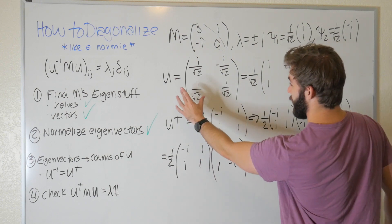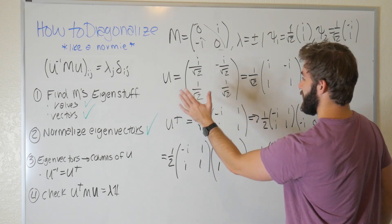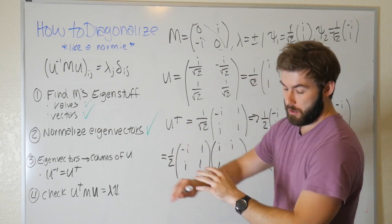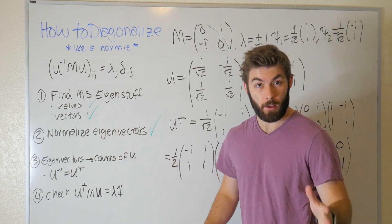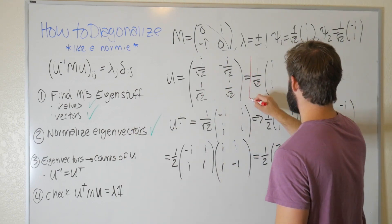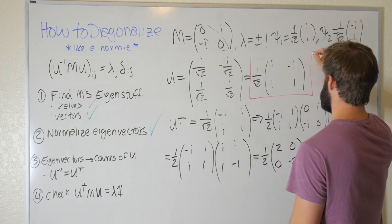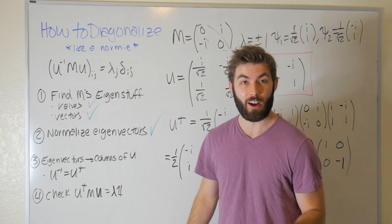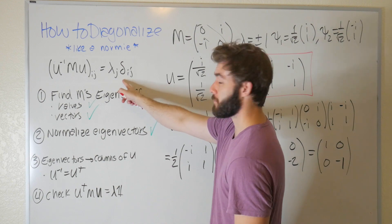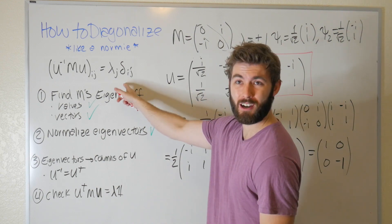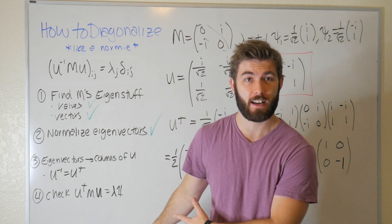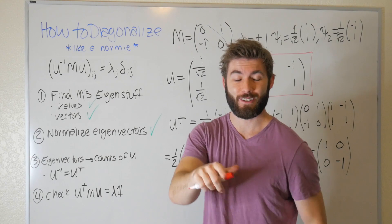We indeed found our unitary matrix that diagonalizes M, and the diagonal components are exactly the eigenvalues +1 and −1. That's all there is to it. Hope you guys found this video helpful — let me know in the comments if you'd like to see me prove this relationship, so it's not just following steps to get the right answer. See you guys there.